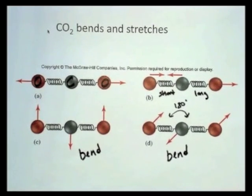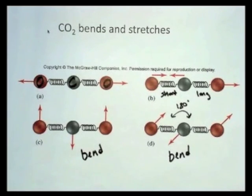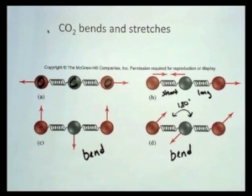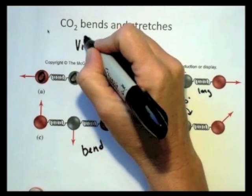We keep advancing our concept of molecules and the models that we use and the models that we need to employ to understand different physical and chemical phenomenon. So now we're recognizing that covalent bonds actually can be modeled as springs, and the bonds can undergo stretching and bending motion. And those types of bends and stretches are called vibrational motion.